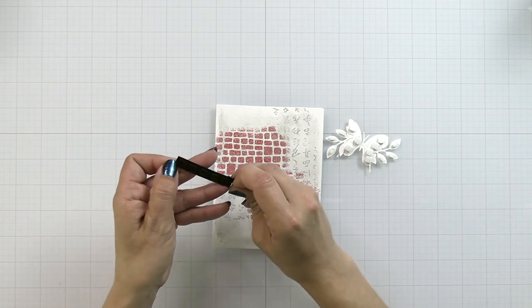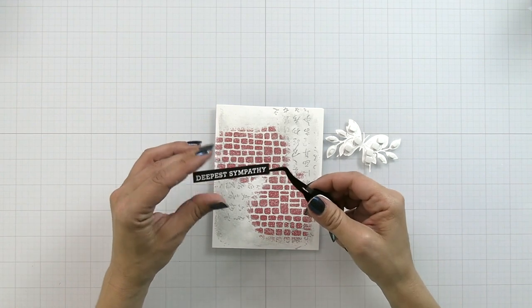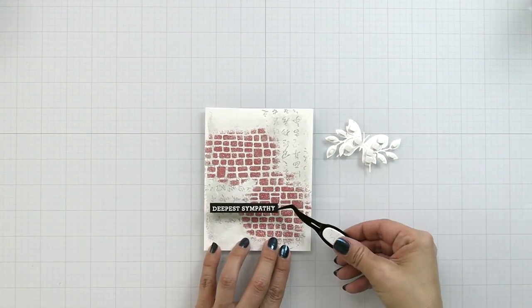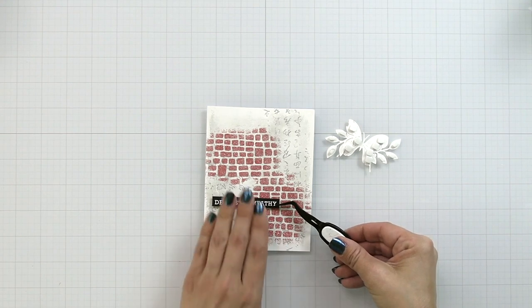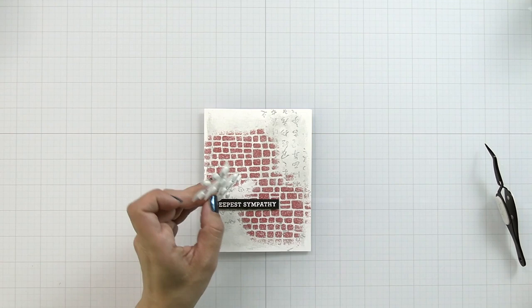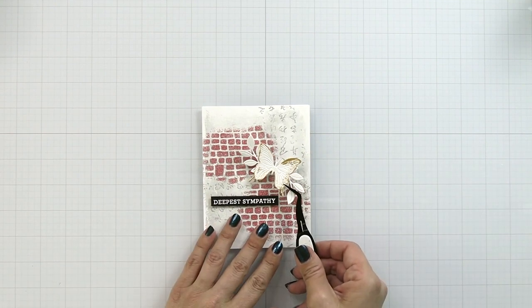I'm going to add foam squares behind my skinny sentiment, remove that backing, and using my tweezers I'm going to place this towards the bottom left hand corner of my card. I also placed foam squares behind my butterfly and the leaves and I'm placing that on the right hand side so it's framing my sentiment.